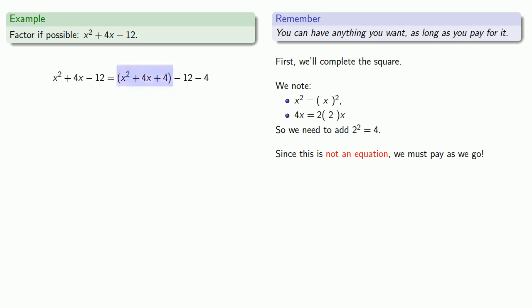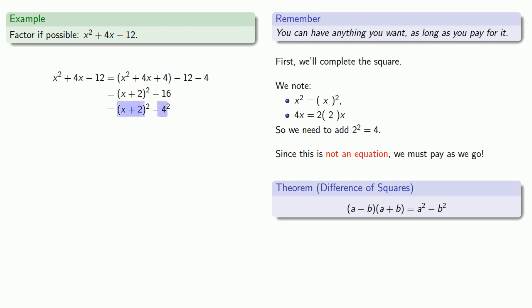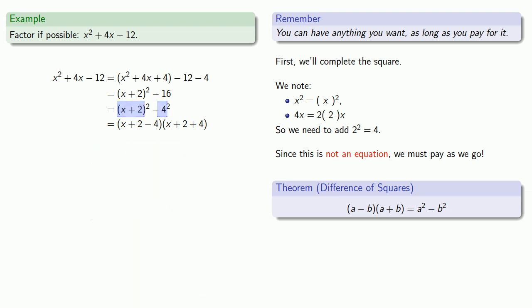It's important to keep this in mind: if we change the left-hand side, we're no longer trying to factor x squared plus 4x minus 12 — we're trying to factor something else. So we'll complete the square by adding 4 and paying for it by subtracting 4. Now our first set of terms is a perfect square, x plus 2 squared. We also have minus 12 minus 4, which is the same as minus 16, and that's also a perfect square, 4 squared. So now we have a difference of squares, which factors as x plus 2 minus 4 times x plus 2 plus 4. Simplifying, this is x minus 2 times x plus 6, and here's our factorization.